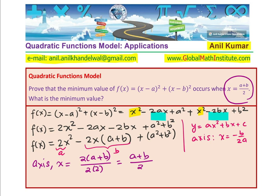Now we need to find the minimum value of this particular function. To find the minimum, we substitute x = (a + b) / 2 into the equation and see what the minimum value is. We could also complete the square, but since we know x = (a + b) / 2, let us substitute it directly. We will do it on a fresh page.